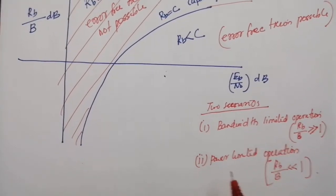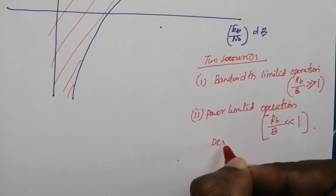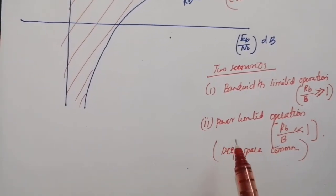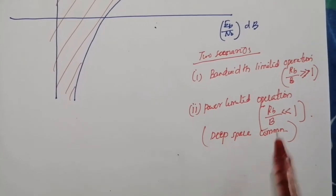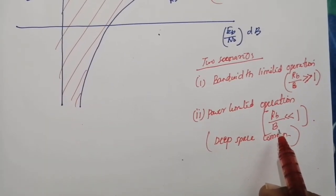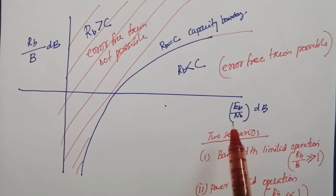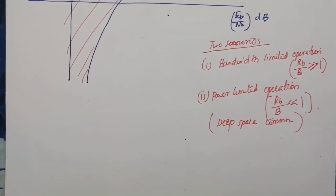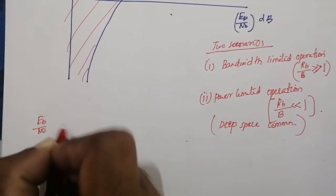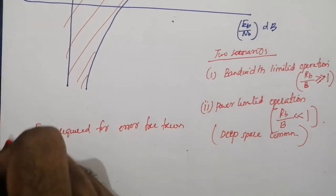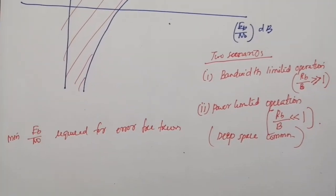Now consider the case of power-limited operation, as in deep space communication. Here we have limited power but higher bandwidth, so Rb is much less than B — meaning we have a larger amount of bandwidth available. The region of operation shifts to the low Rb/B area, and we can see that a lower Eb/N₀ is required for error-free transmission.